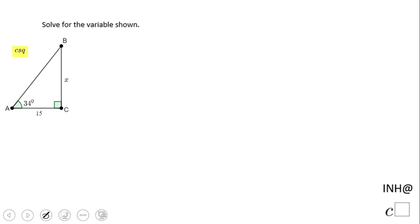Welcome or welcome back to C squared. In this problem, we're going to look for the variable shown, which is this X right here. What is given to us is this angle 34 degrees and this leg 15.